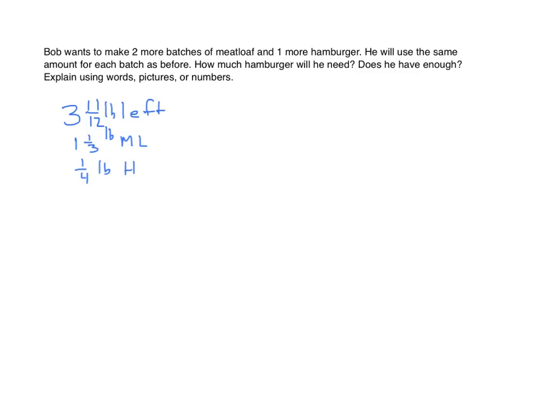The next problem depends upon the information in the previous problem. We have three and eleven-twelfths pounds left, one and one-third pounds per batch of meatloaf, and one-fourth pound for each hamburger. Bob wants to make two more batches of meatloaf and one more hamburger. He will use the same amount for each batch as before. How much ground beef will he need? Does he have enough? Explain using words, pictures, or numbers.